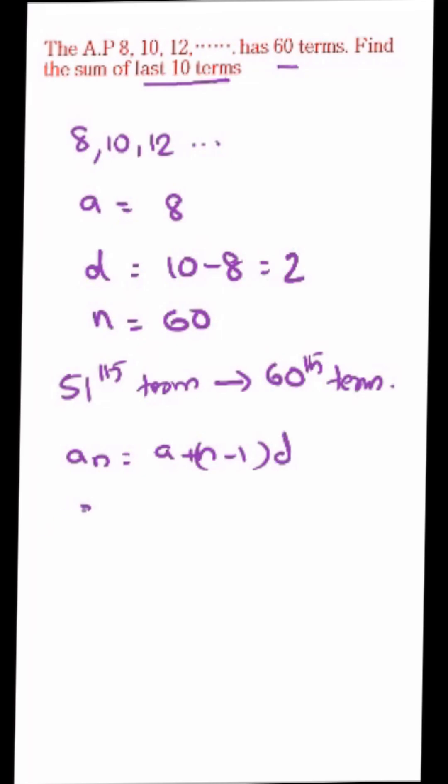So a_51 is equal to A plus, A is 8 plus n minus 1, that's equal to 51 minus 1 into 2. That's equal to 8 plus 50 into 2, that's equal to 108.